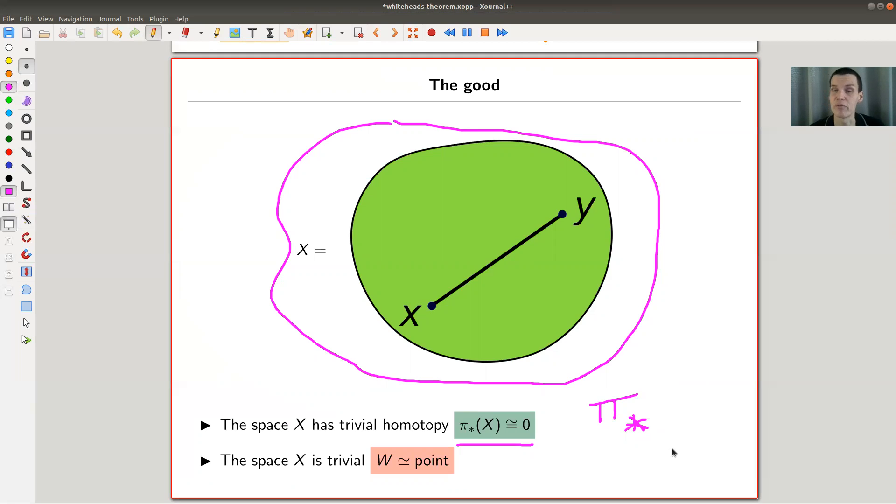The space clearly has trivial homotopy. And this space X here, which is X, is actually homotopy equivalent to a point. So here we have a perfect match between πn in this case, so π* vanishing and the space being trivial. It turns out, and this kind of was one of Whitehead's main examples, that's not always true.